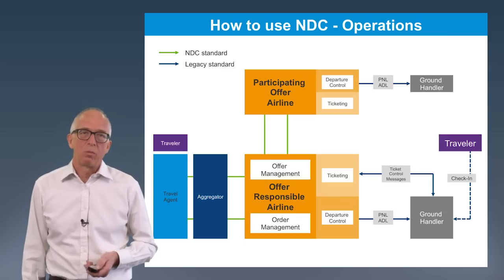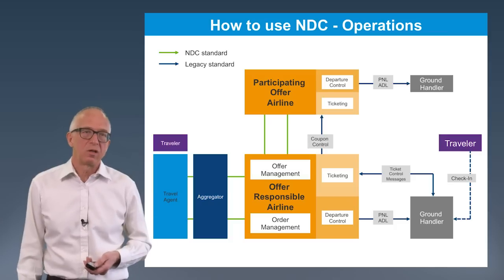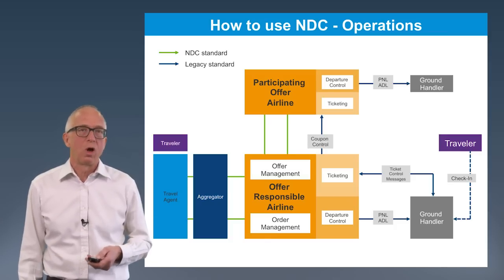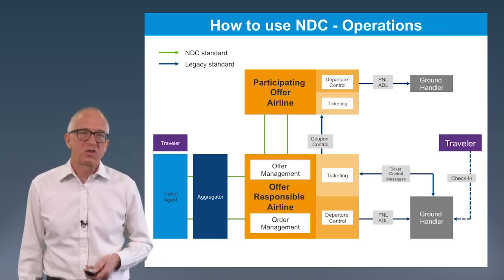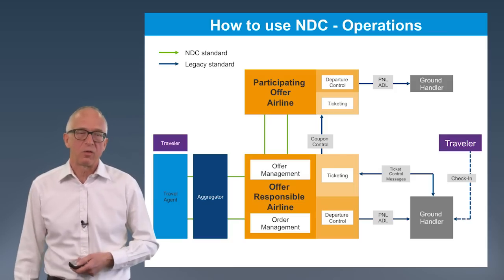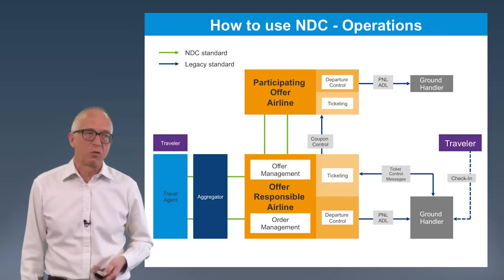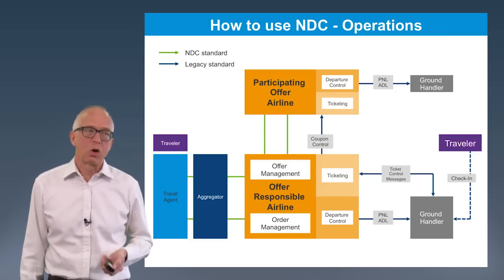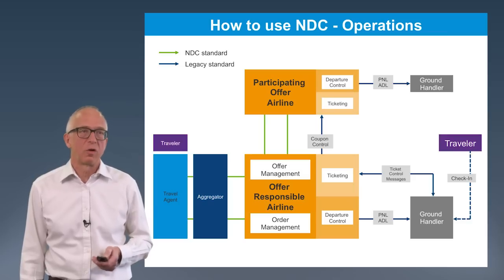However, it's necessary before that flight can take place, for the offer responsible airline — that is the ticketing airline — to provide control of each of the coupons which the participating offer airline can use. And this is designed to prevent a passenger simultaneously asking for a refund through their travel agent, whilst at the same time onboarding a flight from a distant airport. So the control is now passed from the ticketing airline to the participating offer airline.